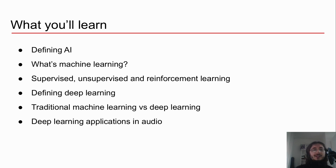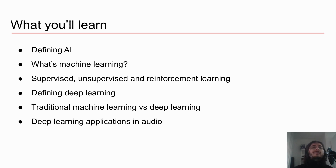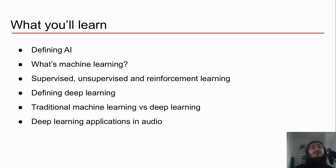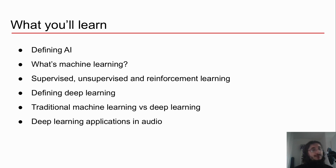We're going to define artificial intelligence and see the relationship with machine learning and deep learning. Then we're going to talk about different machine learning flavors or paradigms like supervised, unsupervised, and reinforcement learning. Then we're going to get into defining deep learning, see the difference between traditional machine learning and deep learning, and finally talk about possible applications of deep learning in audio and music technology.